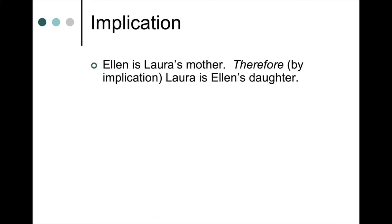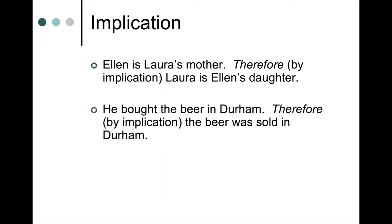Here are some examples. Ellen is Laura's mother; therefore, by implication, Laura is Ellen's daughter. If it's true that Ellen is Laura's mother, then it must also be true that Laura is Ellen's daughter — the truth of the second statement is implied by the truth of the first. Here's another example: He bought the beer in Durham; therefore, by implication, the beer was sold in Durham. Because you cannot buy unless someone also sells, if the beer was bought in Durham, it is implied it was sold in Durham.